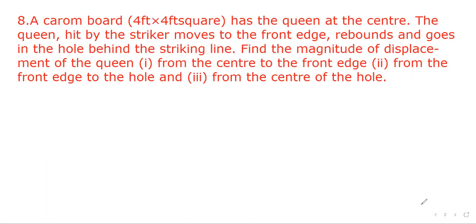Now question number 8. A carrom board 4 feet by 4 feet square has the queen at the center. The queen hit by the striker moves to the front edge, rebounds and goes in the hole behind the striking line. Find the magnitude of displacement of the queen from the center to the front edge, from the front edge to the hole, and from the center of the hole. So first let's draw the diagram.